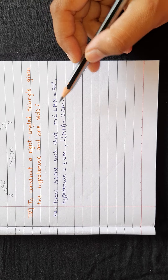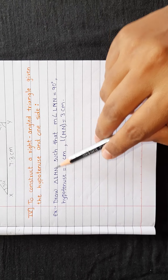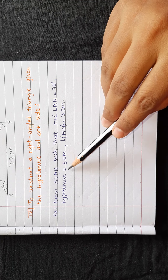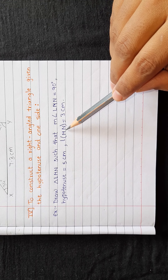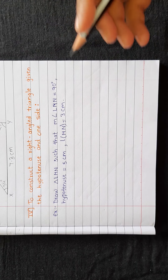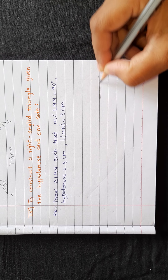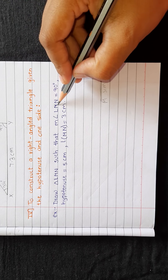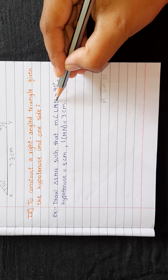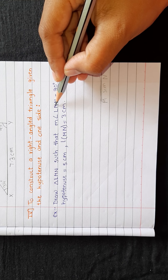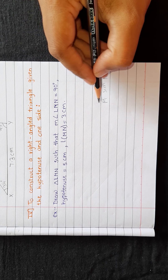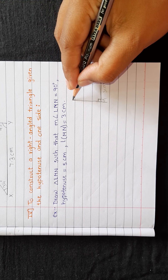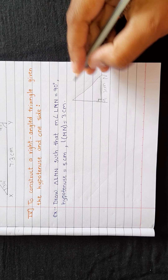We will start the topic with one example. Draw triangle LMN such that angle LMN equals 90 degrees, hypotenuse is 5 cm, and length of MN is 3 cm. MN we will take as base, 3 cm. Angle M is 90 degrees. The letter which is in the middle is the vertex of that angle, so from M we have to draw an angle of 90 degrees and the hypotenuse will be 5 cm.